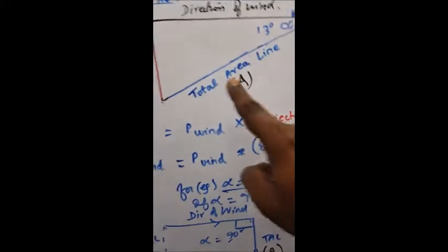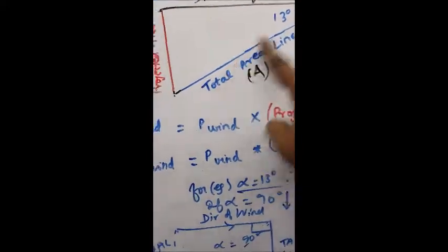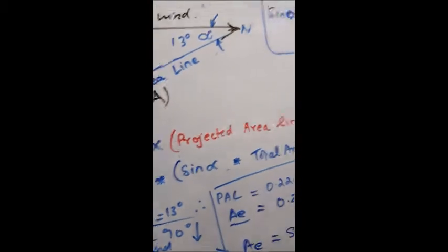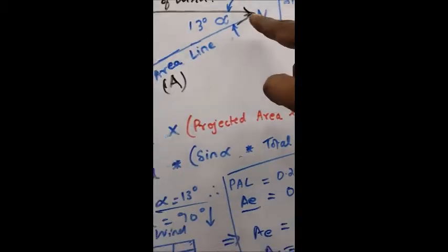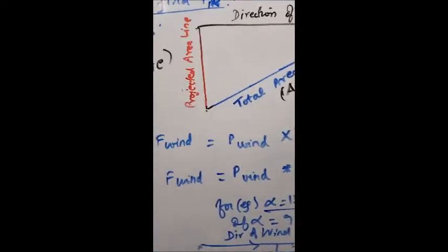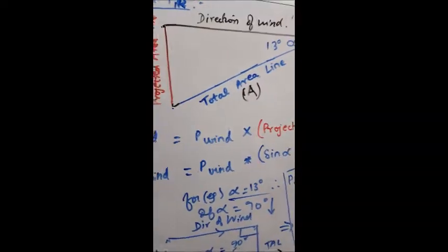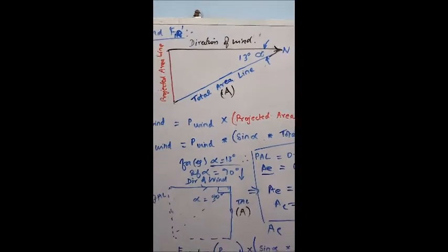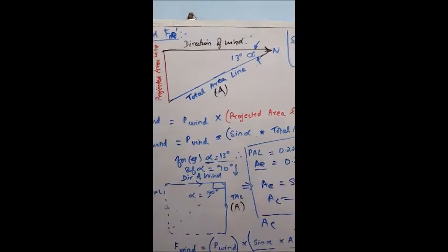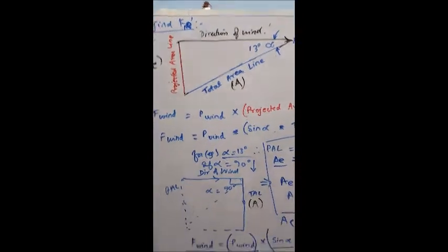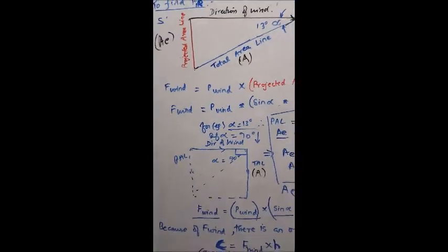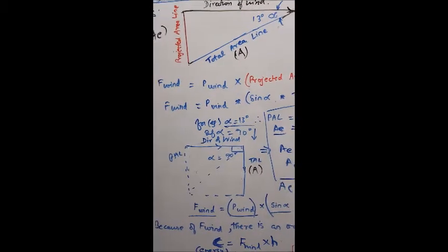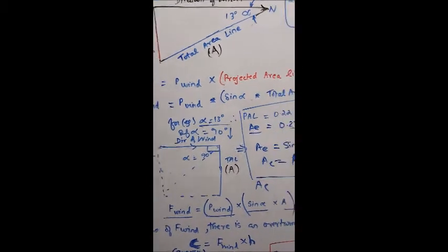In this example, I've shown the direction of the wind. It can also be the other way around, because basically we are going to take the projection of the area of the panels which is exposed to the wind pressure. The force of the wind is the pressure of the wind times the projected area.